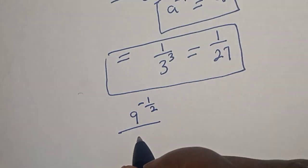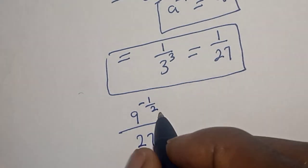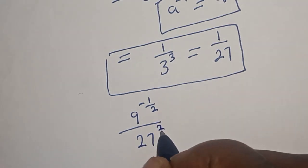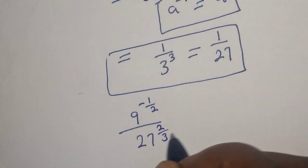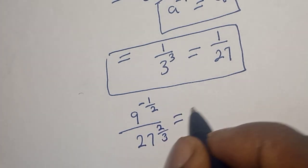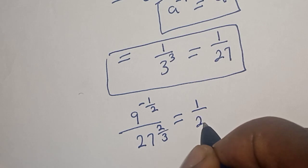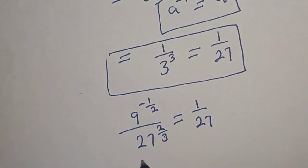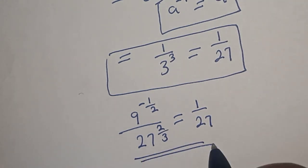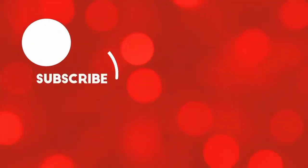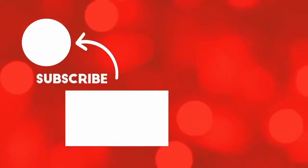Therefore, 9 to the power of minus 1 over 2, divided by 27 to the power of 2 over 3, is equal to 1 over 27. Before you leave, like, share, comment, and subscribe. Thank you, bye bye.